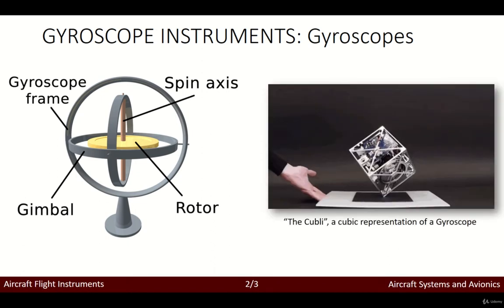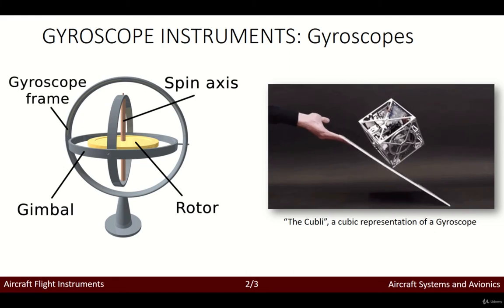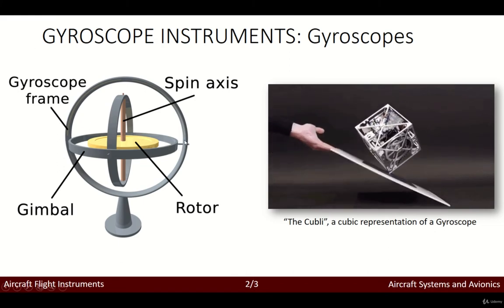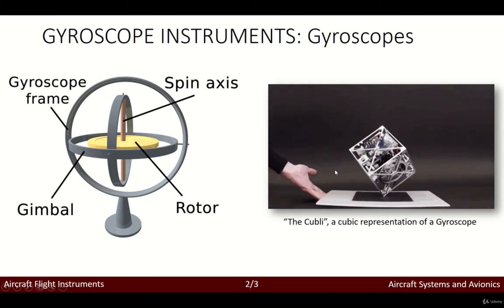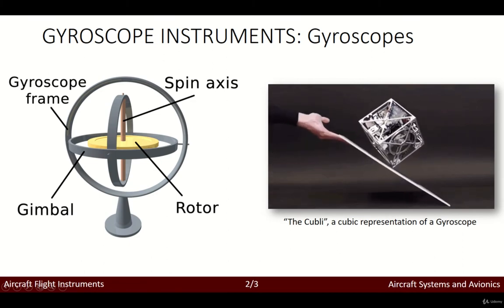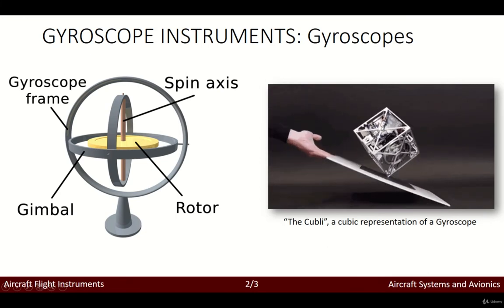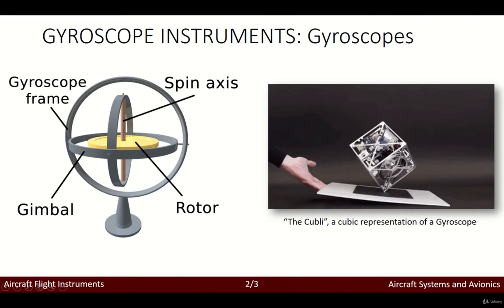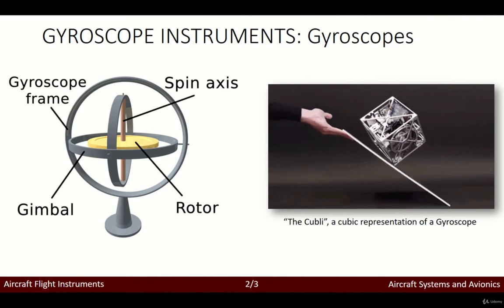This is a quick example of the Kubli, which I found online — a cubic representation of what a gyroscope is. As you can see, by modifying the exterior conditions of the gyroscope, the rotor remains on the same axis all the time, which is exactly what I tried to explain.